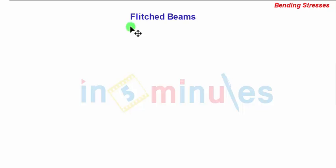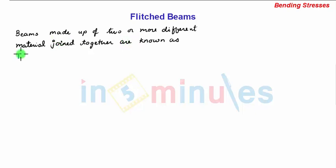Welcome to In5Minutes. Our topic is Flitched Beams. Beams made up of two or more different materials joined together are known as Flitched Beams or Composite Beams.